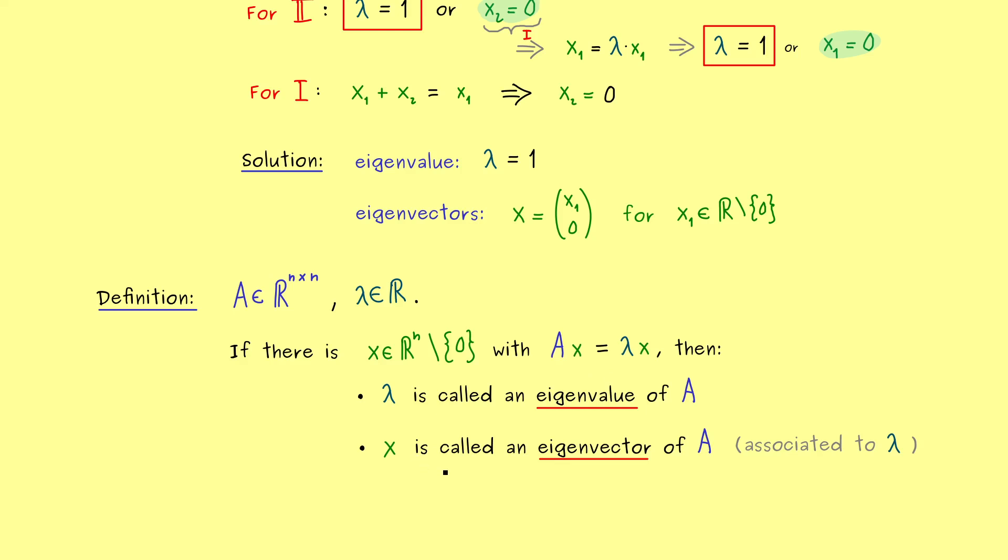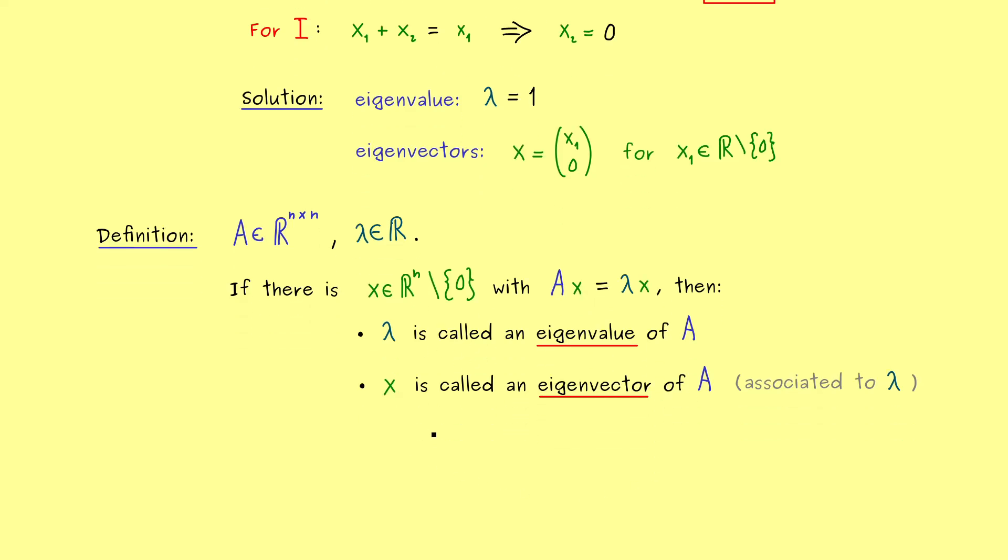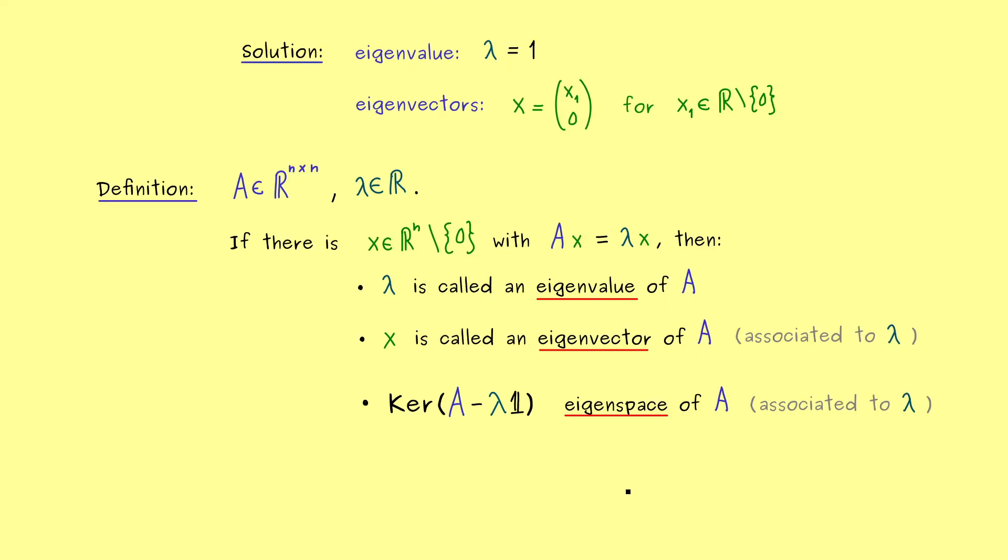Moreover, we have seen before that all eigenvectors together form a kernel. Namely, it's the kernel of A minus lambda times the identity matrix. Therefore, this subspace also gets a special name, it's called the eigenspace of A. Or more precisely, we would say it's the eigenspace of A associated to the eigenvalue lambda. However, now please note, in this eigenspace, the zero vector now is included. We do that because then we just deal with an ordinary subspace here.